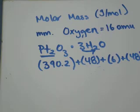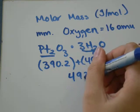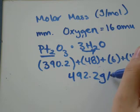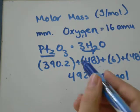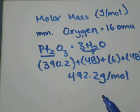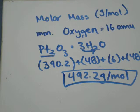So, when we add those all together, we'll go 390.2 plus 48 plus 6 plus 48. And we get 492.2. Think about your units. Molar mass is always in grams per mole. So, one mole of Pt2O3·3H2O would be 492.2 grams.